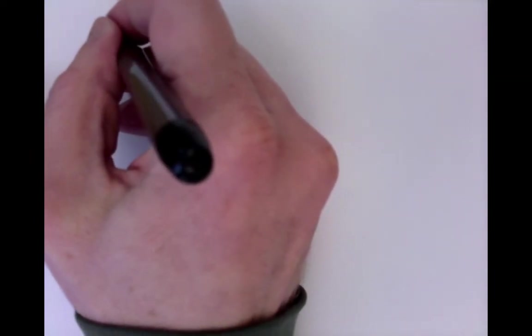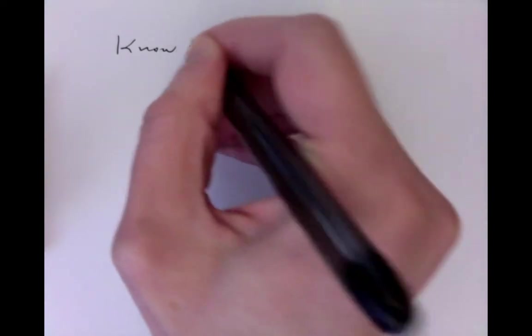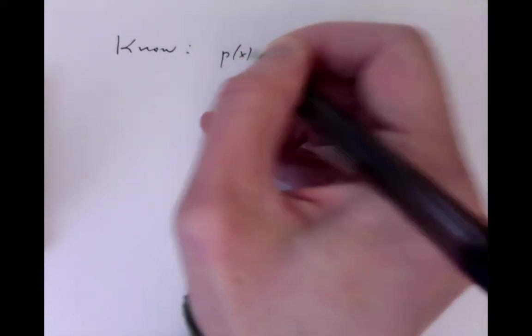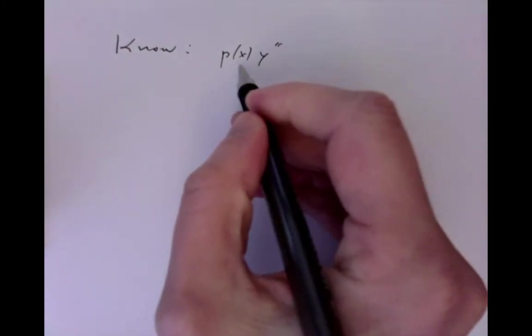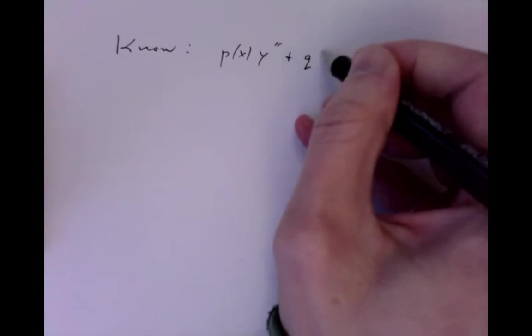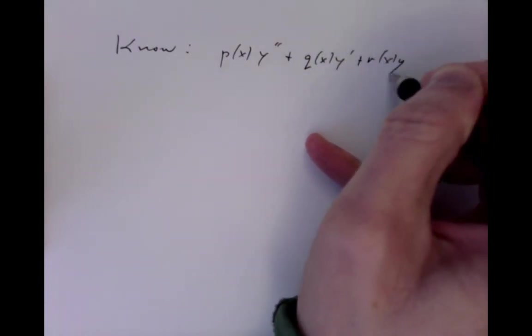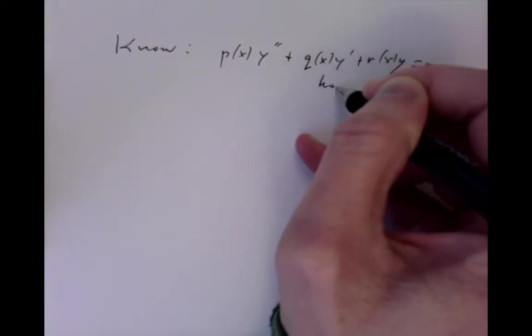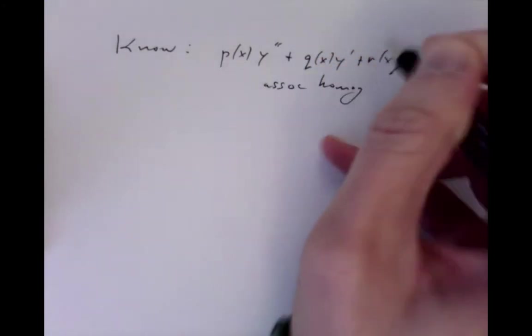The method known as variation of constants supposes that we know how to solve the equation. We're looking at inhomogeneous and non-constant coefficient equations. Suppose we already know somehow how to solve p·y'' + q·y' + r(x)·y = 0 — the associated homogeneous equation.